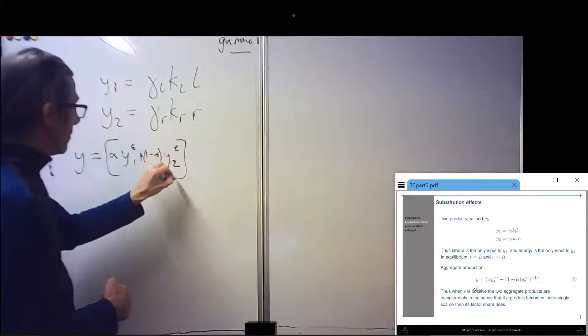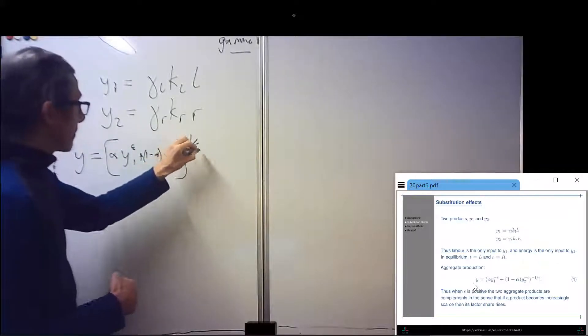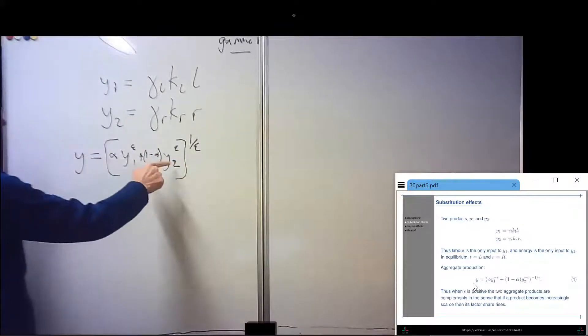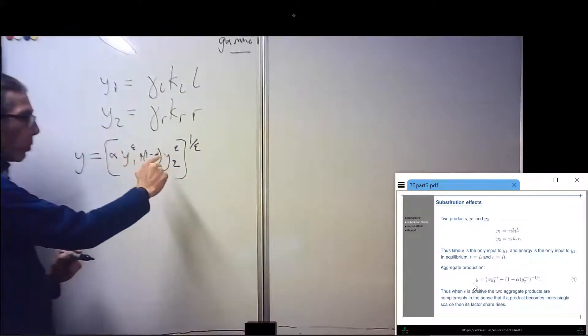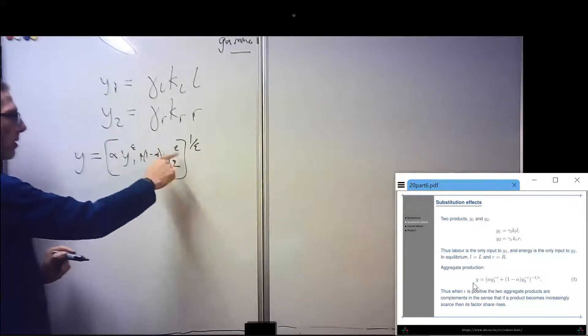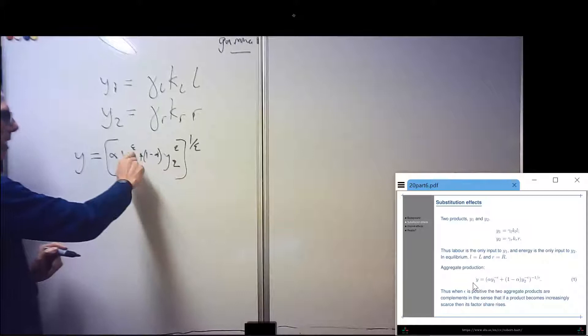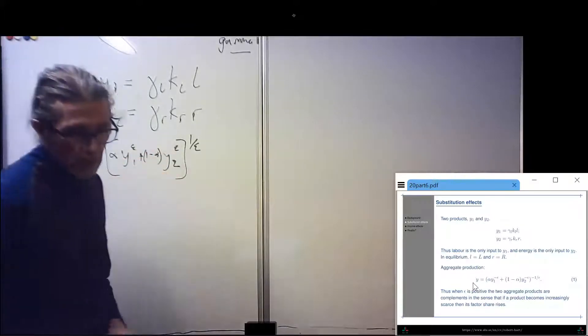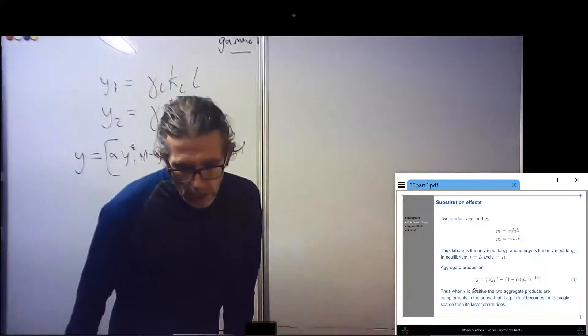Consumers want a mixture of the two. They don't just want either all education or all flights, they want a mixture. How strong are their preferences for that mixture? We can have that determined by a parameter. We can do a CES function where Y is a CES function of Y1 and Y2. When epsilon is 1, they're perfect substitutes. When epsilon is 0, this collapses to Cobb-Douglas. When epsilon's minus infinity, there's no substitutability.